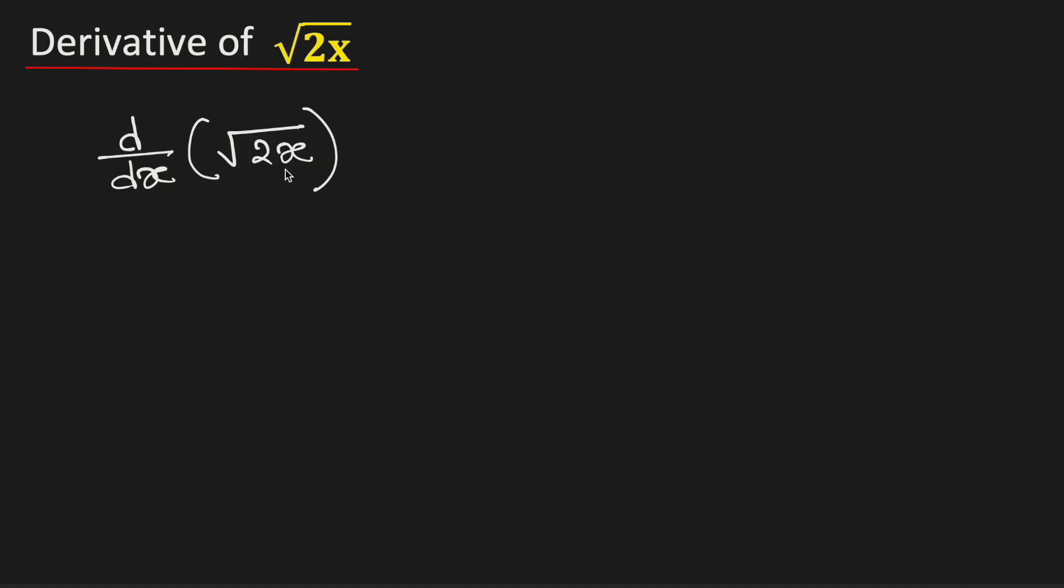In this video we will find the derivative of square root of 2x. At first see that we can write square root of 2x as square root of 2 times square root of x.